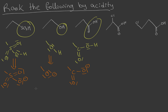Now we consider how many resonance forms each conjugate base has. For the sulfur group, moving a lone pair down creates one resonance form, and moving another lone pair to make a new double bond gives a second. This means the sulfur group has three major resonance forms — a negative charge can be delocalized across all three oxygens.